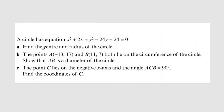Part A: we are asked to find the center and the radius of the circle. Part B: the points A and B with their corresponding coordinates both lie on the circumference of the circle, and we are asked to show that the line segment AB is a diameter of that circle. The last question reads: the point C lies on the negative x-axis and the angle ACB is equal to 90 degrees, and we are asked to find the coordinates of C. Alright, let's get started.